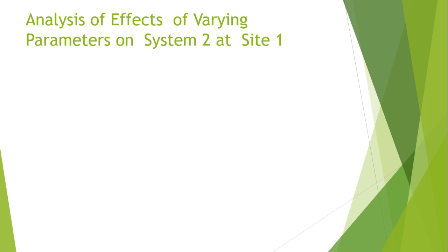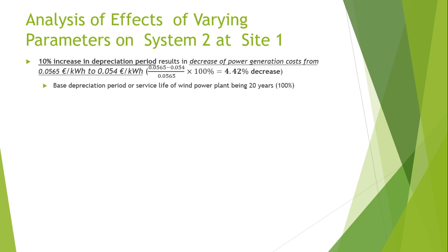We will continue with the analysis of effects of varying parameters on system number two at site number one. A 10% increase in the depreciation period results in an increase of power generation cost from 0.056 euros per kilowatt-hour to 0.0105 euros per kilowatt-hour, making it around a 4.42% decrease, based on the depreciation period or service life of the wind power plant being 20 years and operational for 100% of the time.